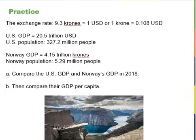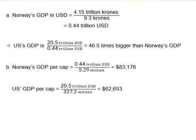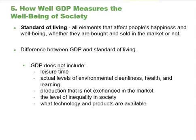Let's do another example comparing the US and Norway's GDP and GDP per capita in 2018. If you want to give it a try, please pause the video now. The level of GDP per capita clearly captures some of what we mean by the phrase 'standard of living.' Most migration in the world involves people moving from countries with relatively low GDP per capita to countries with relatively high GDP per capita.